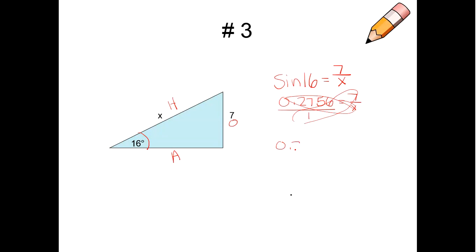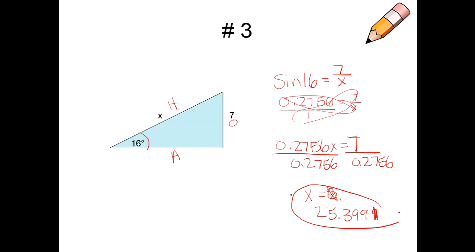So, I'm going to be 0.2756X equals 7. So, now I can divide by the 0.2756. That's going to make it a lot easier. Otherwise, I find some students that divide by 7 and they're ultimately not getting the correct answer. So, if you do the cross multiplication, it will be correct. And you should get X equals 25.3991 for my particular side, my hypotenuse.